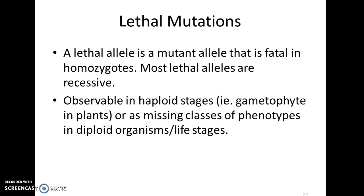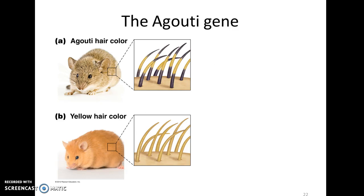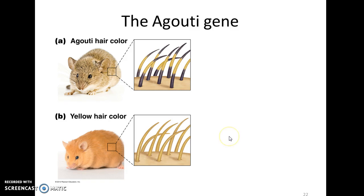Let's look at an example of this: the agouti example. There's a gene that all animals possess called the agouti gene, and the most clearly detectable phenotype associated with it is that in wild type organisms we see what is called agouti coloring — a banding pattern. This has been really well studied in mice. If you've got the wild type agouti allele and you're a mouse, you're going to show this banded pattern. If you're showing yellow hair color, then you have the yellow version of the agouti gene and you'll see no banding in the hair follicle or hair shaft.